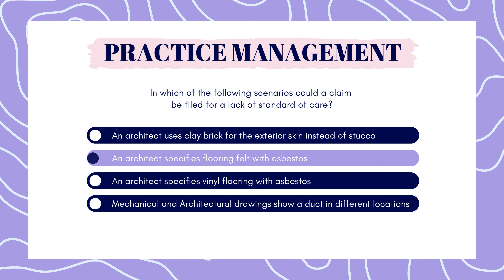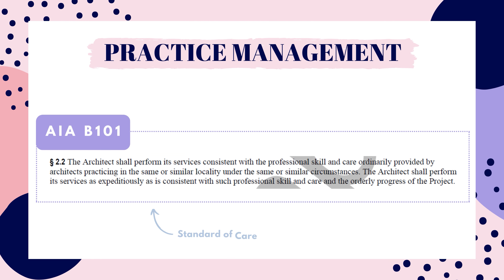The answer is: an architect specifies flooring felt with asbestos. So we're starting out with a tricky one this week. For this question you need to know what the standard of care is and what products the EPA still allows asbestos in — so this one is a double whammy. Standard of care for an architect is what a reasonably prudent architect would do in the same locale, in the same time frame, given the same facts or circumstances. This statement can be found in AIA document B101. I've linked a sample PDF below if you'd like to flip through it.